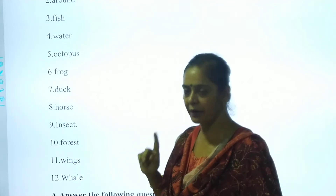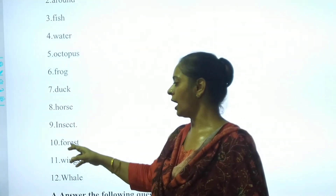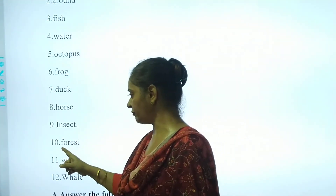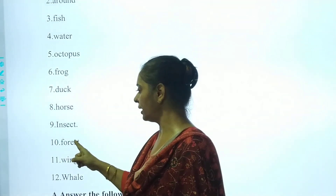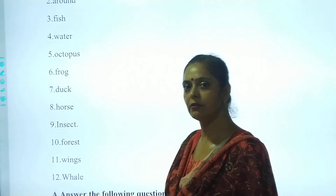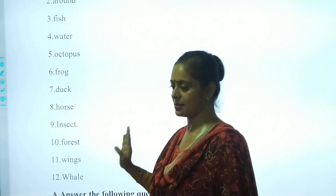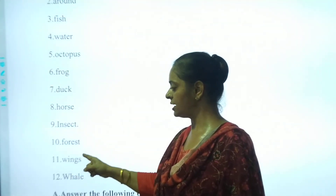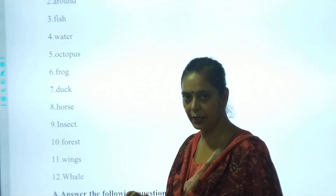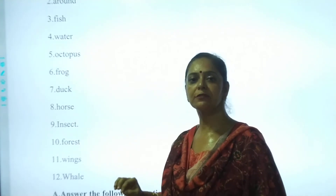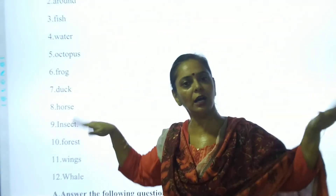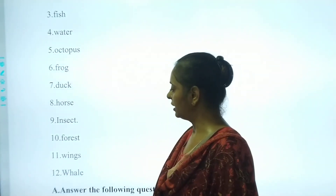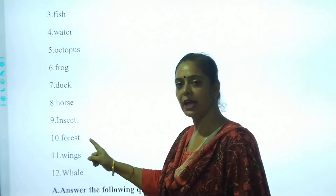Ten is Forest. F, O, R, E, S, T. I'll repeat: F, O, R, E, S, T. It's called Forest. And the next is Wings. W, I, N, G, S. W, I, N, G, S. Birds fly with the help of their wings. Wings — birds fly with the help of its wings.